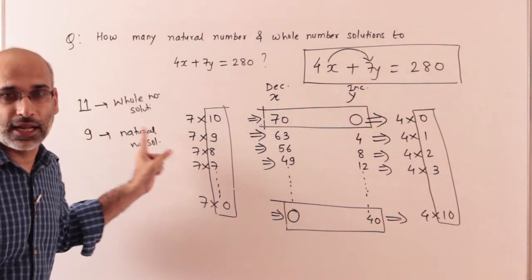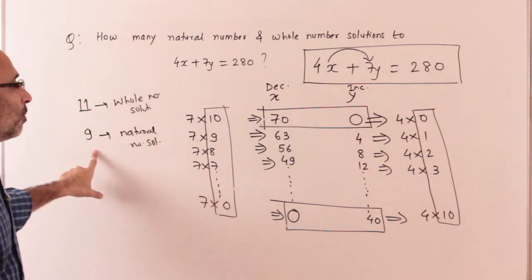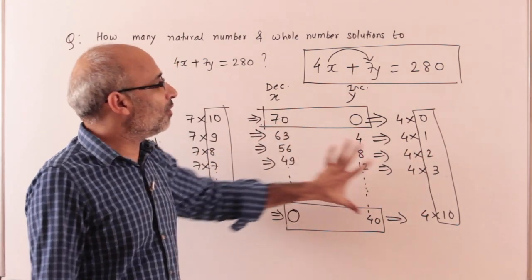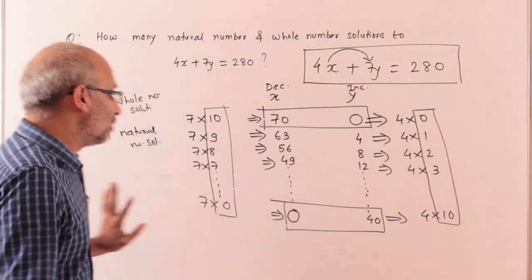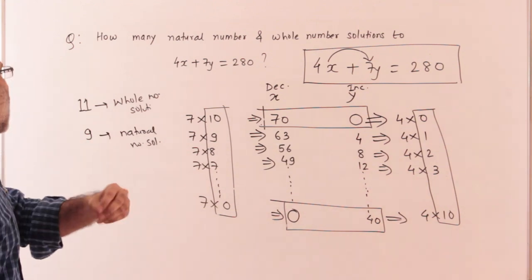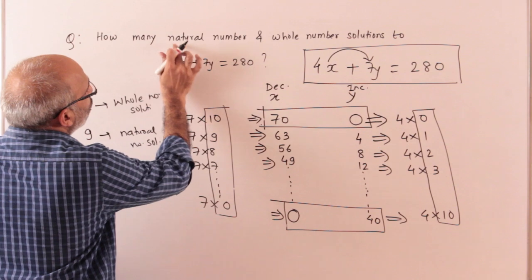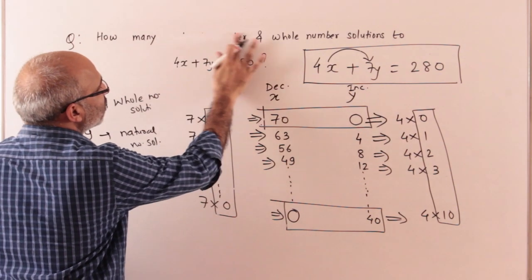So again, if you have to count from 0 to 10, the answer will be the same. This will not be counted for natural numbers.